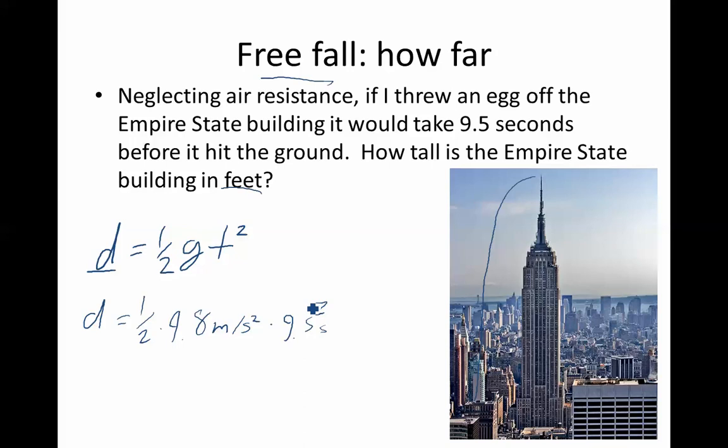You take nine and a half times nine and a half, you'd square nine and a half, times 9.8, times 0.5, or you could divide it by two either way, you would end up with a distance of 443 meters tall.